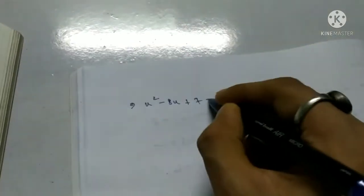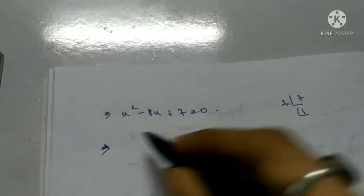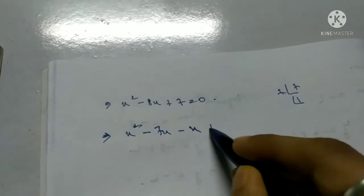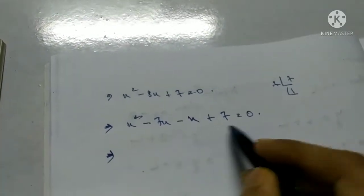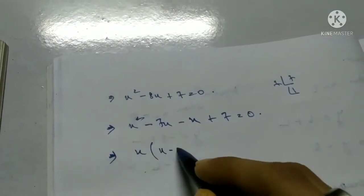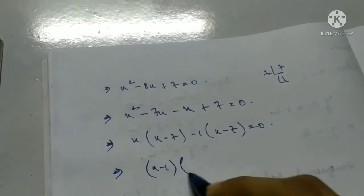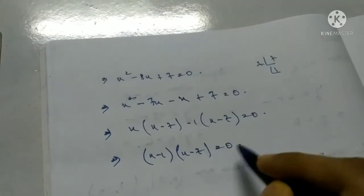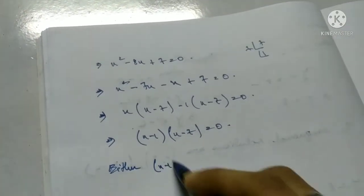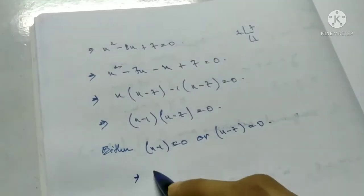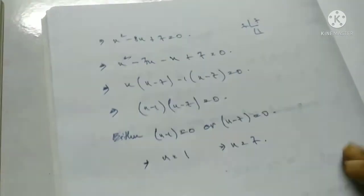Splitting the middle term: x squared minus 7x minus x plus 7 equals 0, so x(x minus 7) minus 1(x minus 7) equals 0, giving (x minus 1)(x minus 7) equals 0. Therefore x equals 1 or x equals 7.